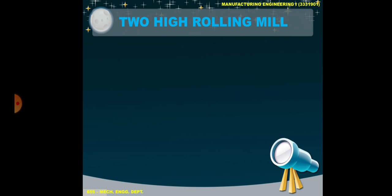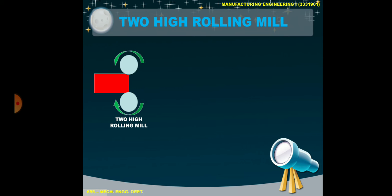Starting with 2-high rolling mill. A 2-high rolling mill consists of 2 rollers that rotate in opposite directions, and the workpiece passes between them. With the help of a 2-high rolling mill, it reduces a small amount of thickness of the workpiece.